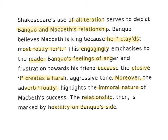So I've taken those ideas on plosives and packaged them up into a truly scrumptious paragraph. I'm going to read it through this time and I'm not going to bother explaining the highlighting — I think you're smart enough, going on what I've said before, to think about why certain words and phrases are highlighted and what best practice for the exam is being drawn to your attention. Shakespeare's use of alliteration serves to depict Banquo and Macbeth's relationship. Banquo believes Macbeth is king because he 'played most foully for it.' This engagingly emphasises to the reader Banquo's feelings of anger and frustration towards his friend, because the plosive F creates a harsh, aggressive tone. Moreover, the adverb 'foully' highlights the immoral nature of Macbeth's success. The relationship then is marked by hostility on Banquo's side. That last line is there because my secondary analysis of 'foully' was slightly veering away from the question about the relationship — so I've looped back, keeping the content task-focused.